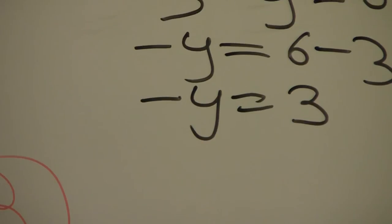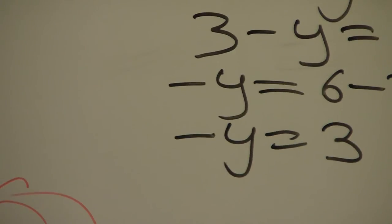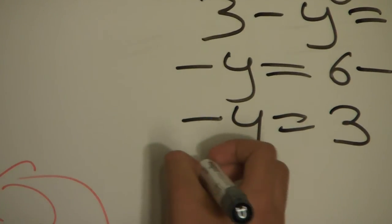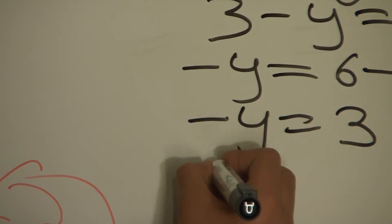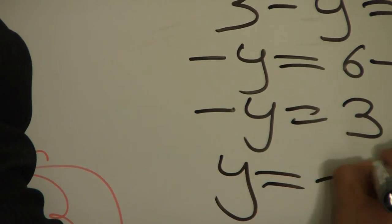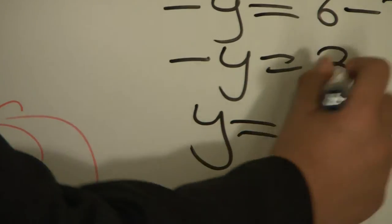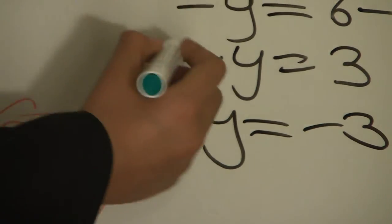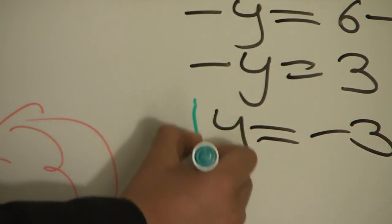So instead of writing minus y equals 3, we will write y equals minus 3. This will be labelled as equation number 4.